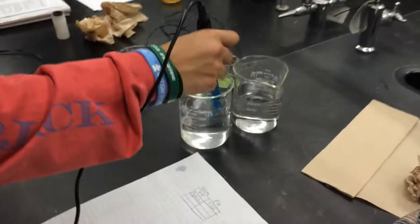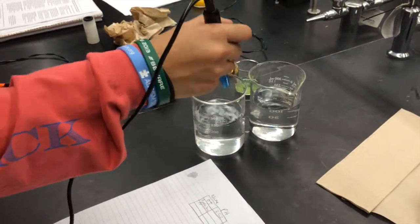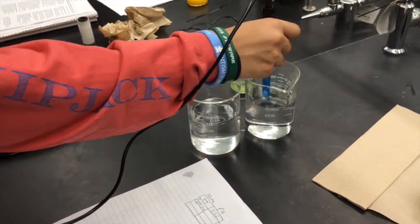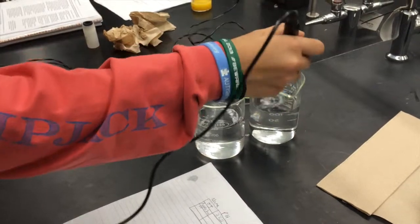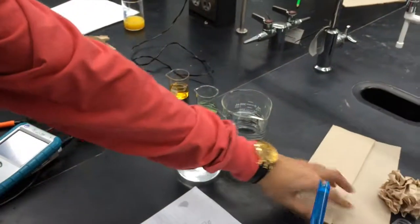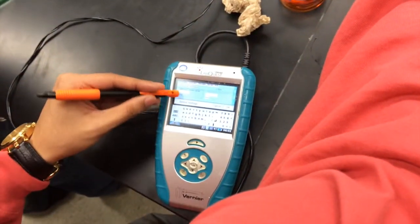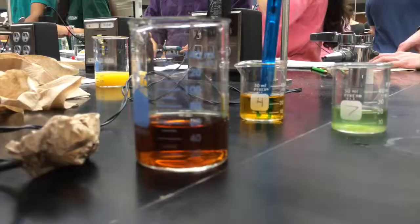Rashik is now preparing the pH probe for obtaining the pH of the 2 buffer solutions. Rashik calibrates for the pH of the 7 buffer solution, and now for the 4 buffer solution.